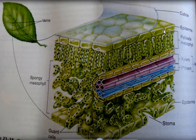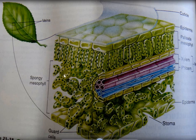Between the two epidermis — the upper and lower — you have the mesophyll. This is the region of the leaf that we call mesophyll. Mesophyll is composed of the first layer of cells that we call palisade mesophyll, and the spongy mesophyll. Between the cells of palisade mesophyll we don't have much space, just a small space. But in the spongy mesophyll we have big spaces among the cells, which is important for the transport of gases. Both palisade and spongy mesophyll contain small dots inside the cells that we know as chloroplasts.